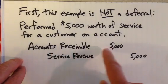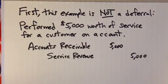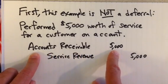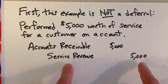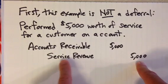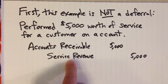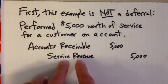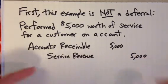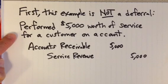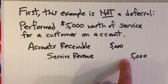We debit accounts receivable for the $5,000 that we are owed because we have not yet received the cash. The cash is forthcoming — hopefully we'll be getting that within a month or so — but we don't have the cash yet for the work we did. So we debited accounts receivable for $5,000. That's an asset. What did we credit? The revenue account. In this case, we called our revenue account service revenue because we're a company that performs service.